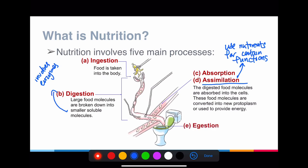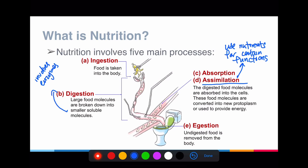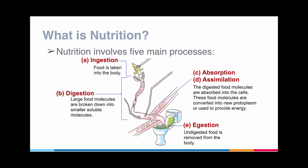The last process is called egestion. In egestion, the undigested food is removed from the body. This is the part where, if you go to the toilet, the waste that you produce is what we call faeces. So that's your egestion process.